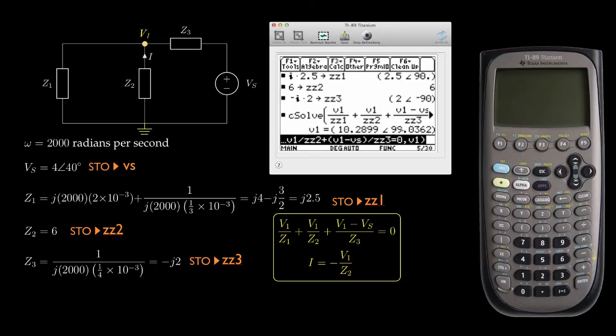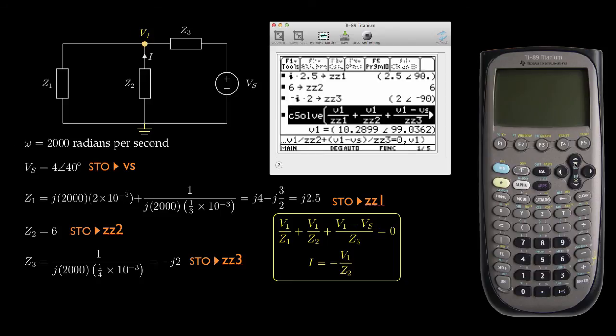Now, one thing that I think is important in terms of checking your work, if you use the navigation buttons on the calculator, you can move upward and go take a look at your equation that you just entered. So I just want to double check it. I can see that I get V1 divided by Z1 plus V1 divided by Z2 plus V1 minus VS. I can scroll over. Divided by Z3. I've set that equal to zero. And I've asked to solve for V1. So that all looks good to me.